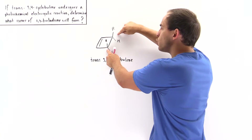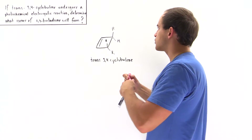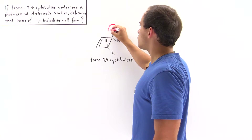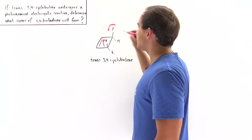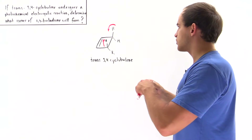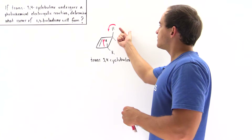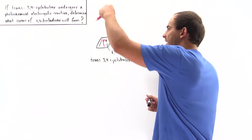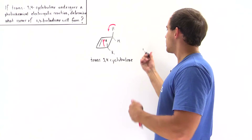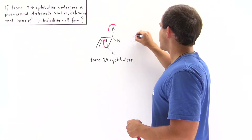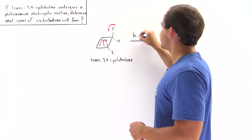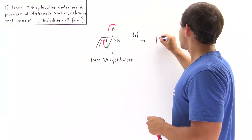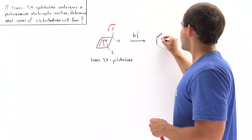Disrotation means the two orbitals rotate in opposite directions. In the first case, this bond rotates inward — one end rotates counter-clockwise and the other clockwise, so both go inward. We designate the light source as hν (Planck's constant h multiplied by frequency ν).